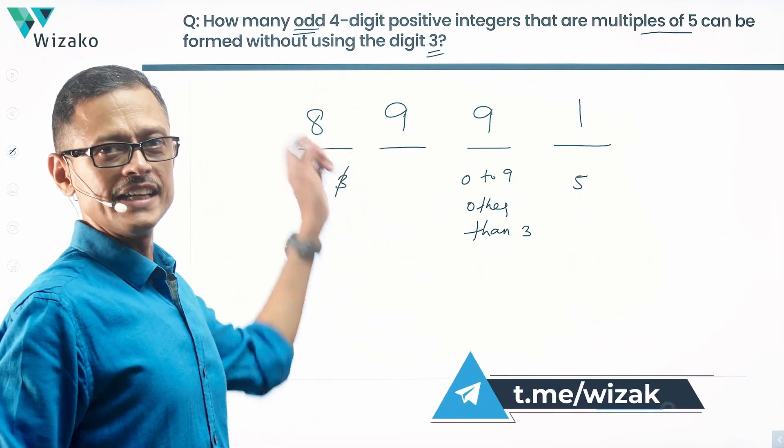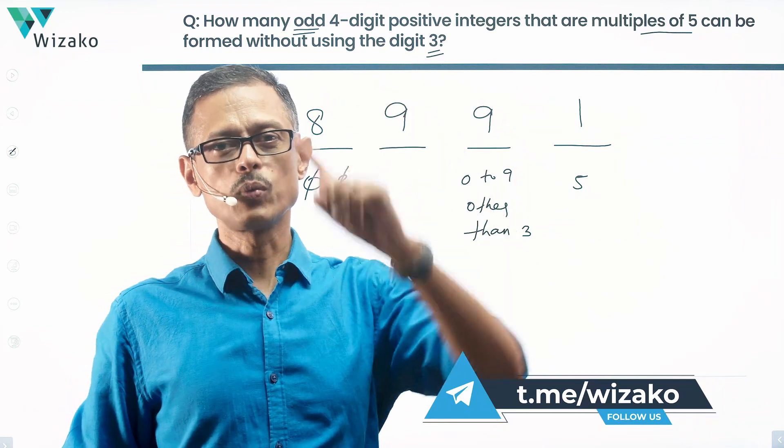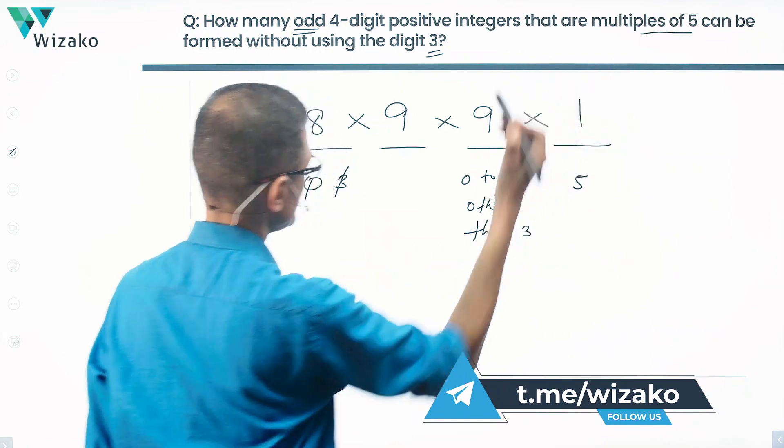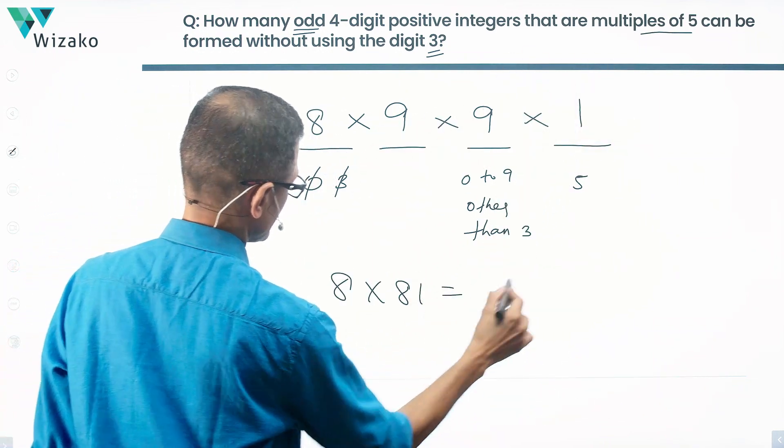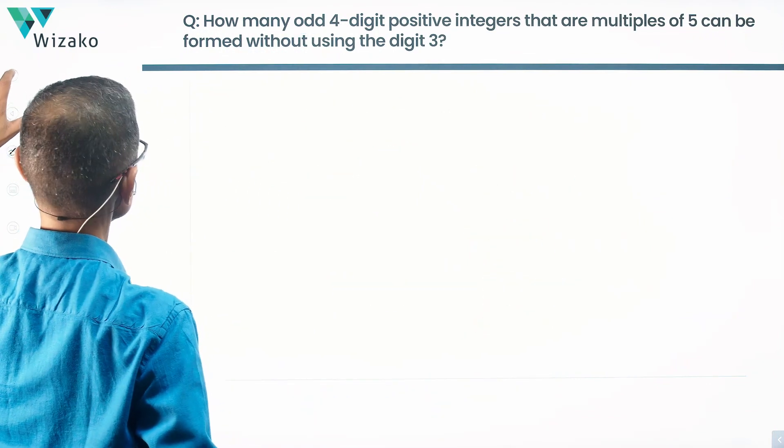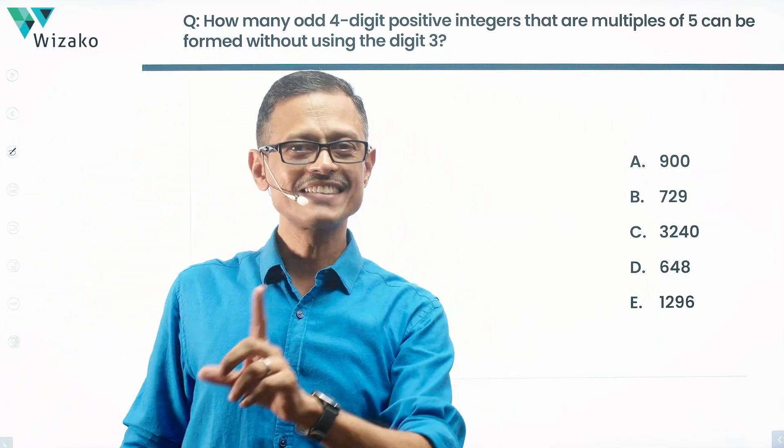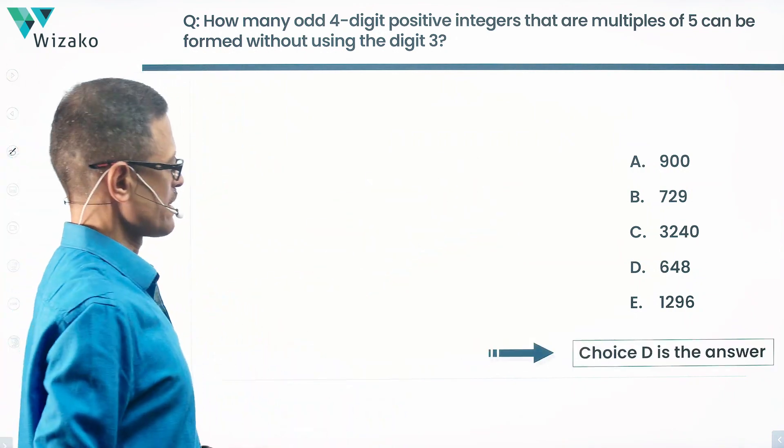So how many numbers totally exist? 8 possibilities for the 1000s, 9 for the 100s, 9 for the 10s, and only 1 for the units place. So 8 times 9 times 9 times 1 is what we have. This is 8 times 81, and that is equal to 648. 648 four-digit odd positive integers exist which do not contain the digit 3 and are multiples of 5. Choice D is the correct answer to this question.